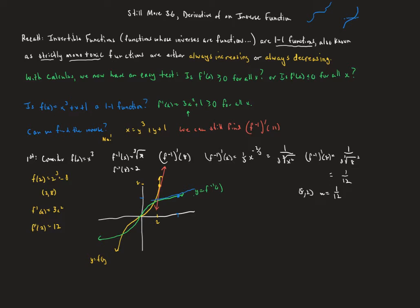If you imagine the line y = x, reflecting the original function in that line gives the inverse. And when you flip the tangent line along with the curve, the tangent at (2, 8) maps to the tangent at (8, 2), with the slope becoming its reciprocal. That's the key relationship: the derivative of the function at a point is the reciprocal of the derivative of the inverse at the switched ordered pair.